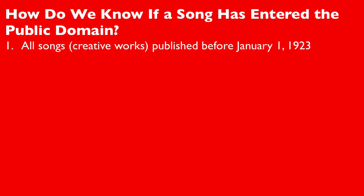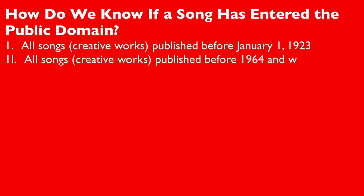How do we know if a song has entered the public domain? In the United States, any songs — words and music — that were published before January 1st, 1923, are in the public domain. This means the copyright protection and all exclusive rights for those songs have expired and are now available to anyone to use however they choose. Any work published before 1964 whose copyrights were not renewed also fell into the public domain.